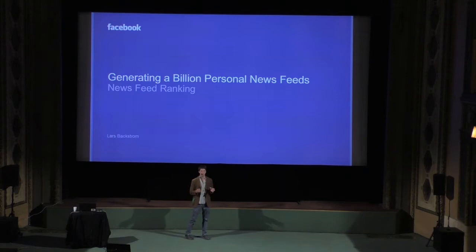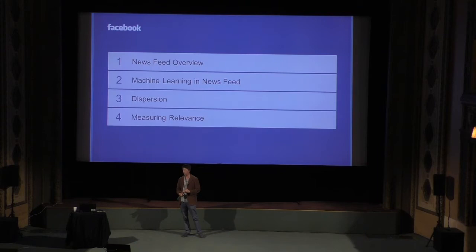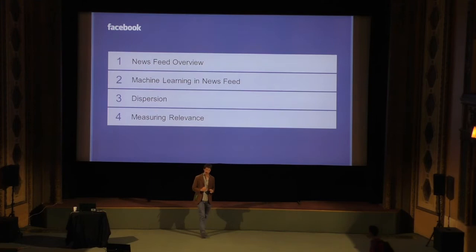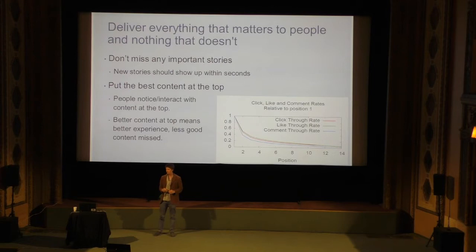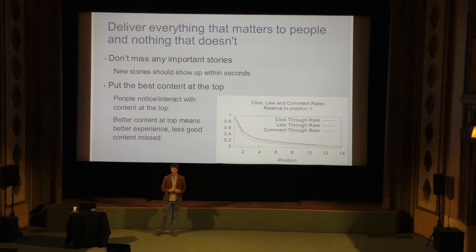To be clear, what I mean by Newsfeed is the main client experience — the main tab in the app or the home page. I'll talk mainly about how we use machine learning in Newsfeed, and I'll do a deep dive on one feature we built called dispersion. The main reason we rank Newsfeed rather than show it in reverse chronological order is we want to make sure you don't miss any important stories — the most important things from your friends, family, pages you follow, and the most important news.